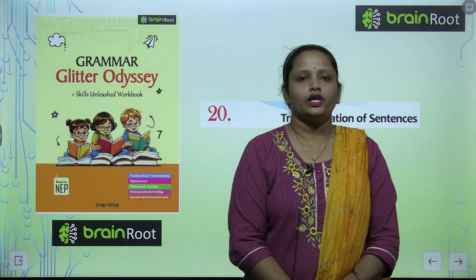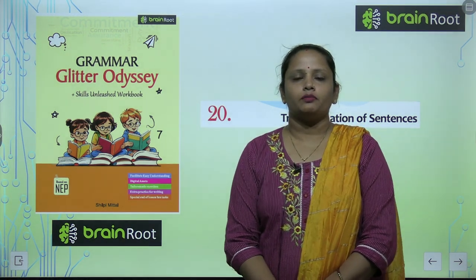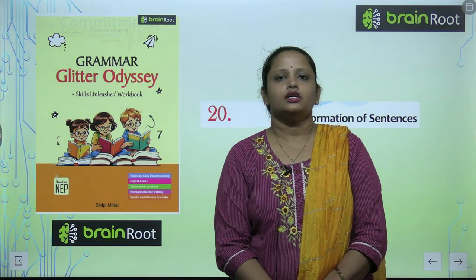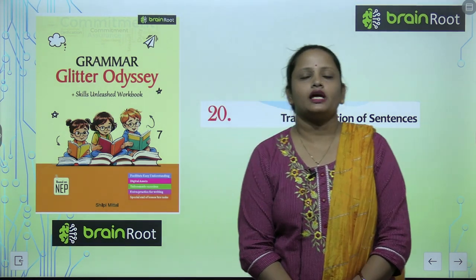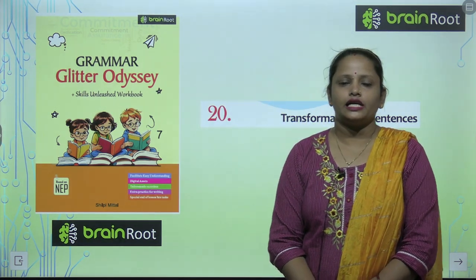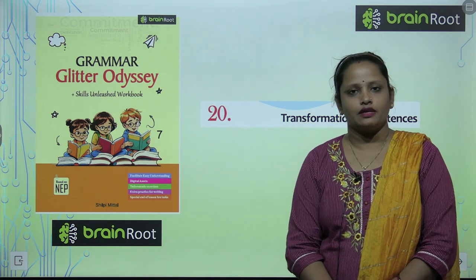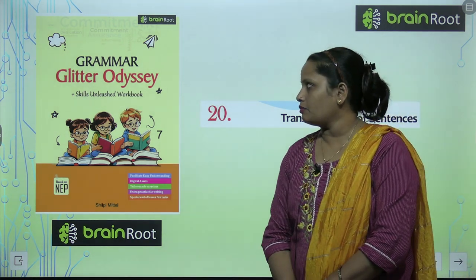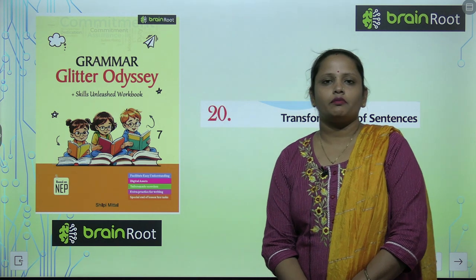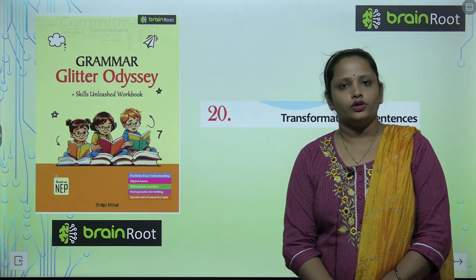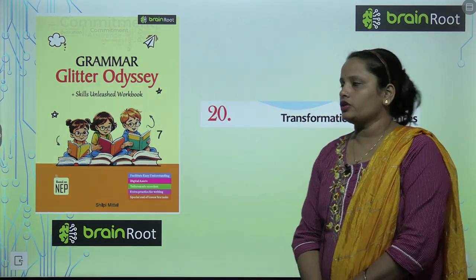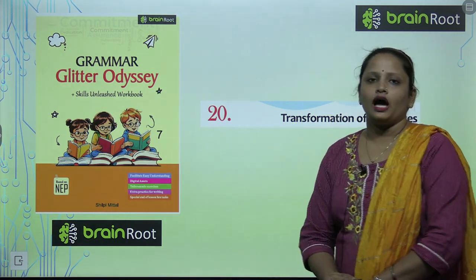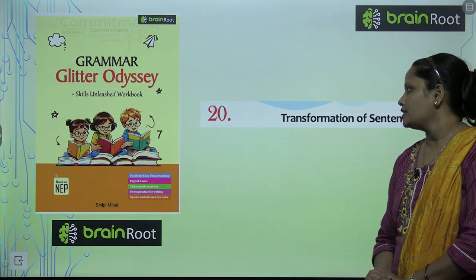Hello my dear kids, welcome back to the Brain Root series by Amit Publishing House Children. My name is Vandana and we are learning English grammar of class 7. Here is a book and the name of your book is Grammar Glitter Odyssey. And today we are going to start with chapter number 20.